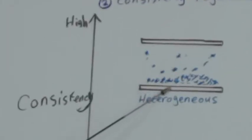The worst case is this, what we call heterogeneous. Low velocity, high consistency.